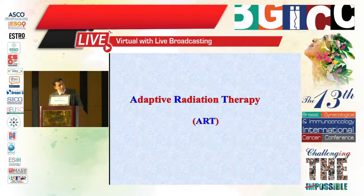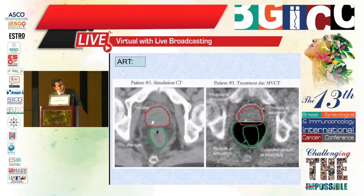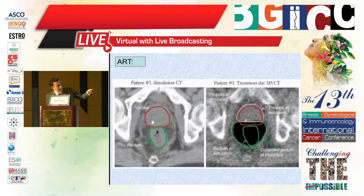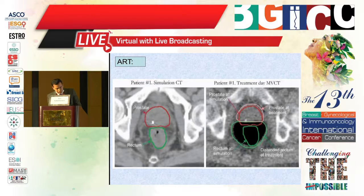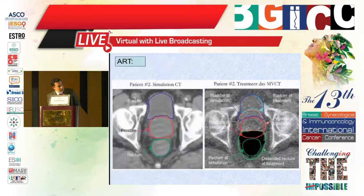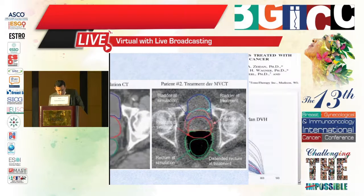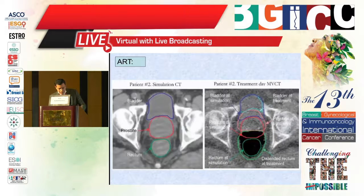Adaptive radiation therapy: before the treatment process, we can see the difference between the two images. In the simulation CT, the prostate volume differs from the treatment situation. Also, the rectum is distended at treatment rather than at CT simulation — both cases illustrate the distended rectum at treatment compared to the CT simulation.